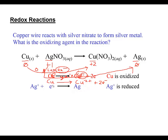Looking at the two half reactions, copper losing two electrons isn't balanced with one silver cation gaining one. To balance that, the silver should be multiplied by two for its coefficients - so I go to two silver cations, and each one gains one electron, giving me two electrons total.